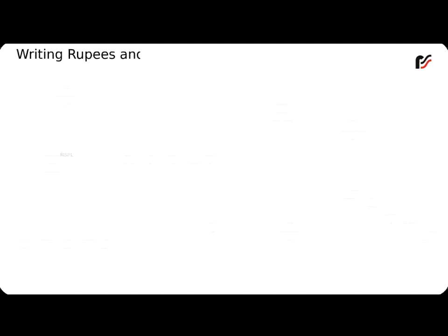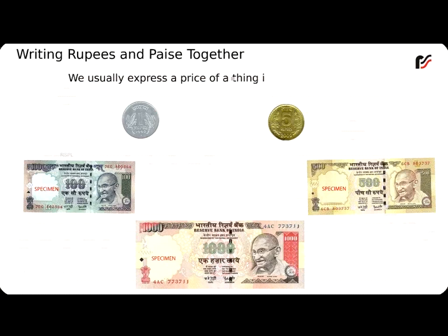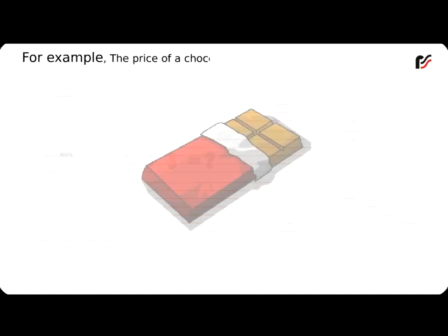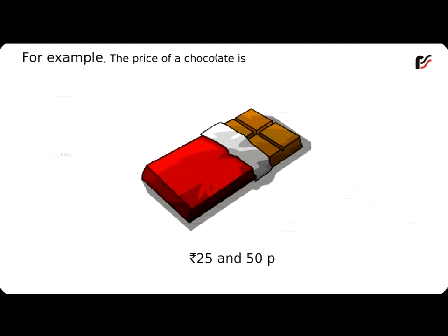Writing rupees and paise together: We usually express the price of a thing in both rupees and paise. For example, the price of a chocolate is rupees 25 and 50 paise. Instead of writing it as rupees 25 and 50 paise, we use a small dot to separate rupees and paise. So, rupees 25 and 50 paise will be written as ₹25.50.